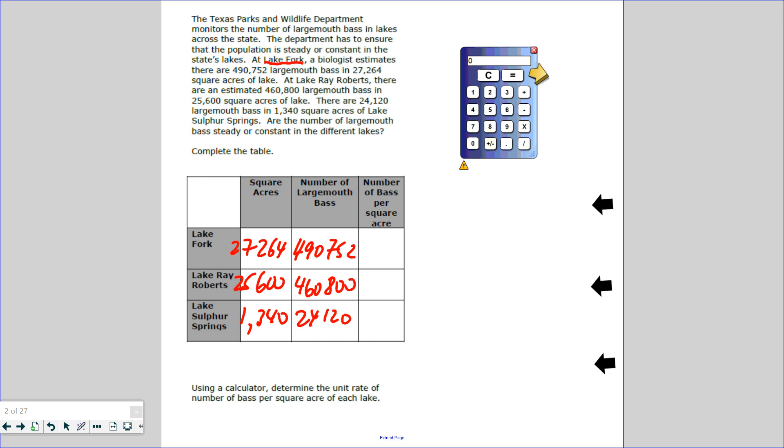So before we do that, let's fill out our table and complete the table. Let me get my pen. So in Lake Fort, there are 490,752 largemouth bass in how many square acres? 27,264.